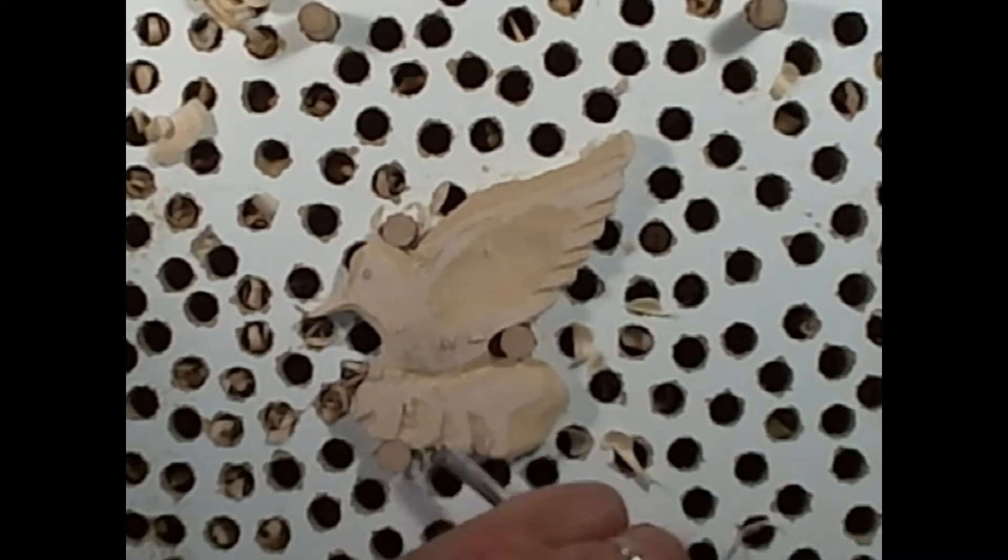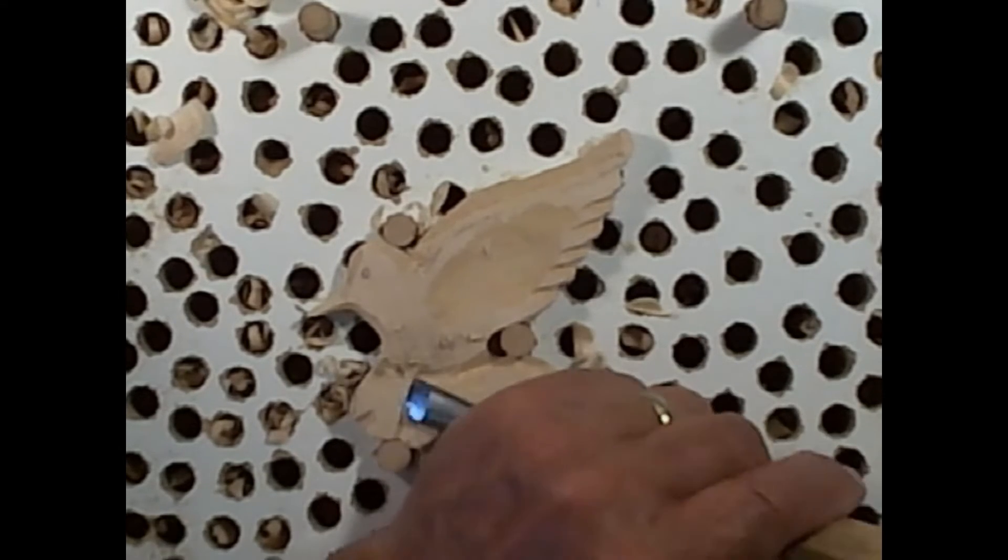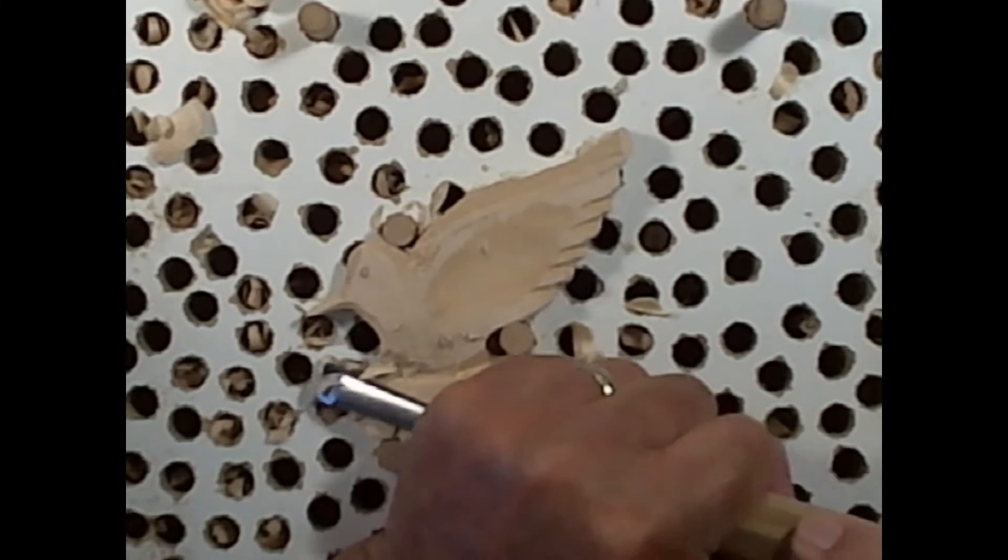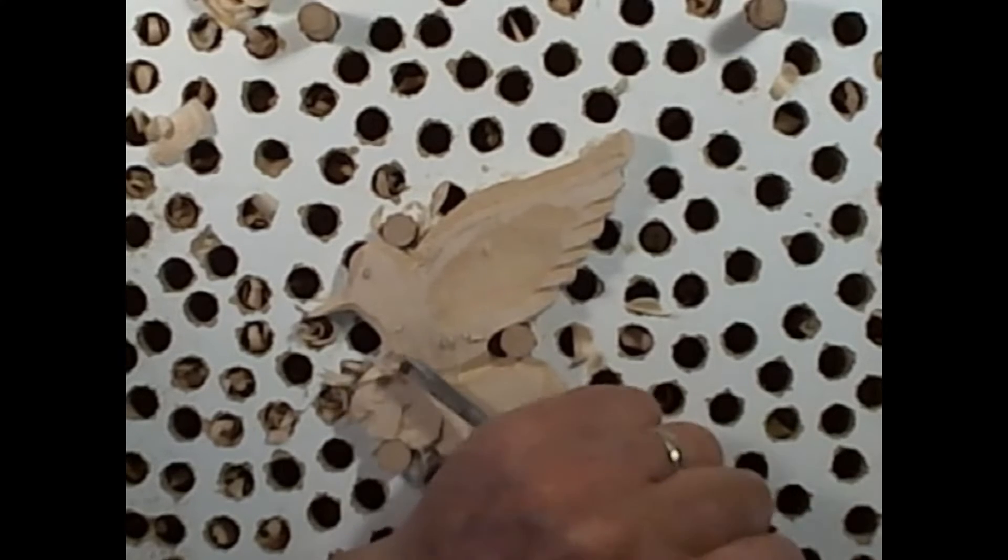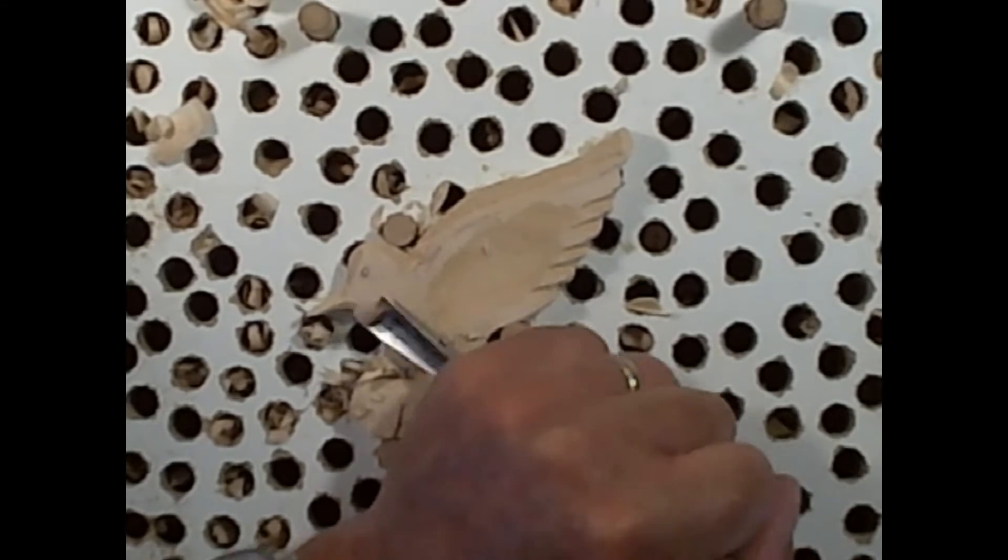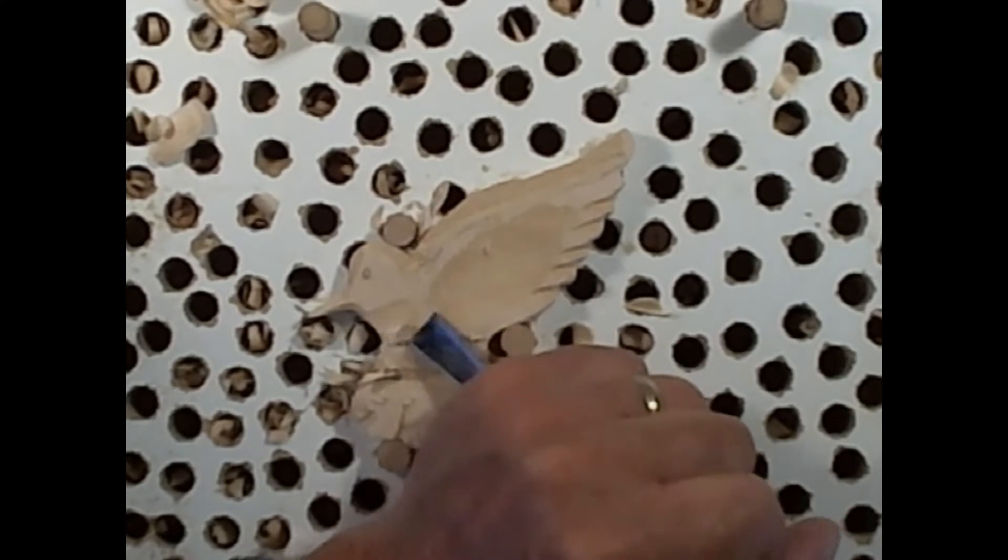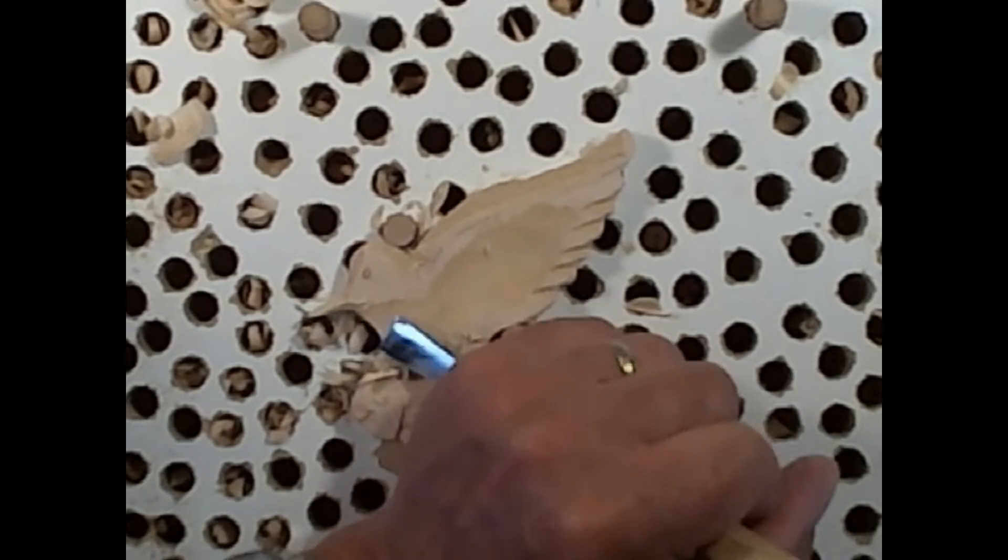Taking the flat gouge, either the five or the three, I'm just going to start rolling this off. Get that neck a little thinner so that the head is rounded out.